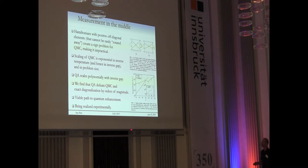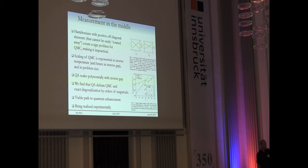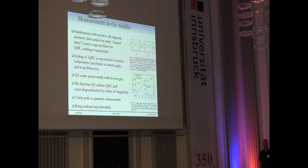Quantum Monte Carlo scales double-exponentially slower than quantum annealing in this regime, because inverse temperature scales as inverse gap. When we plot quantum annealing versus quantum Monte Carlo runtime against problem size, we couldn't even put them on the same figure. We believe this is a viable path for quantum enhancement.